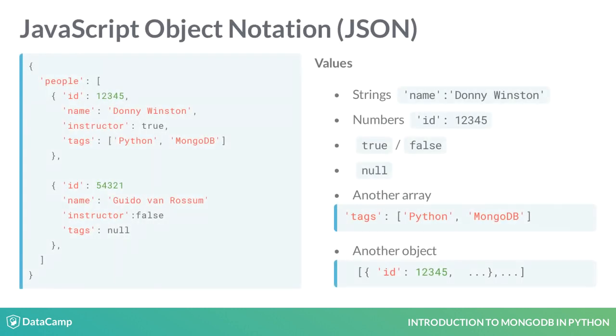Values, in turn, are one of a few things. Values are strings, numbers, the value true, the value false, the value null, or another object or array.